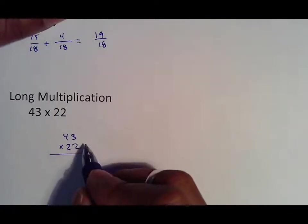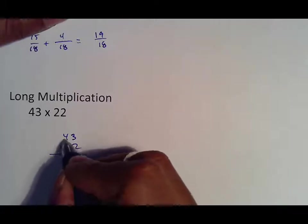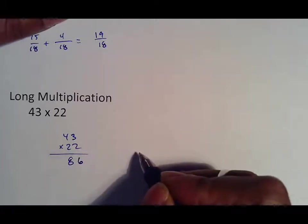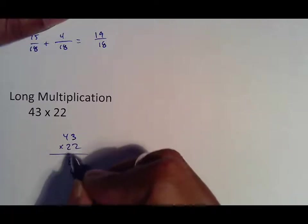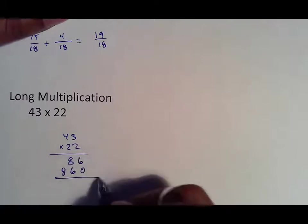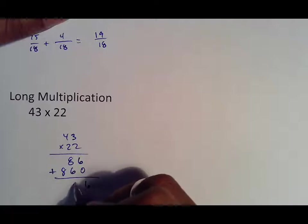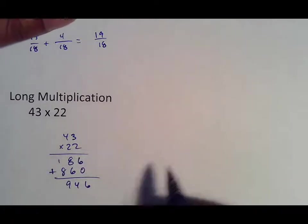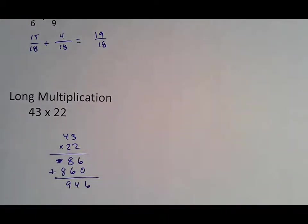So 43 times 22, remember we freeze on this number here. 2 times 3 is 6. 2 times 4 is 8. After you're done with that number, bring down a 0. 2 times 3 is 6. 2 times 4 is 8. Add those two rows. 6 and 0 make 6. 8 and 6 make 14. Carry the 1. 1 and 8 make 9. Remember, in terms of your answers, you do not need to write down that 1 because I don't need you to write that in for extra work.